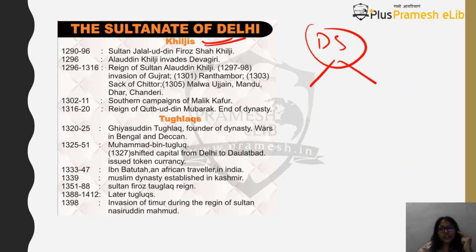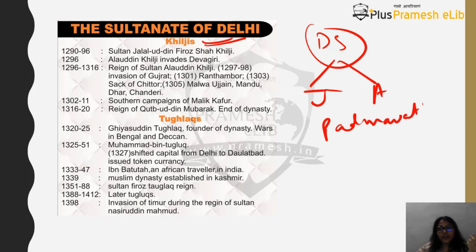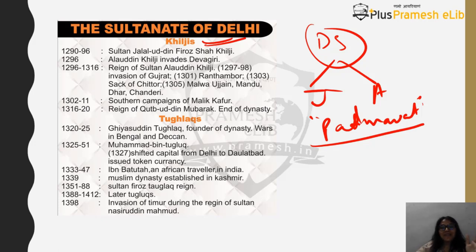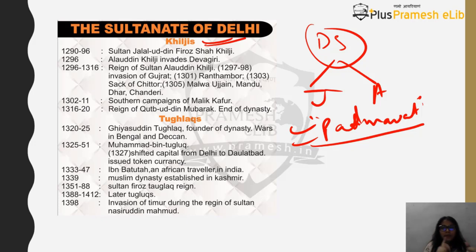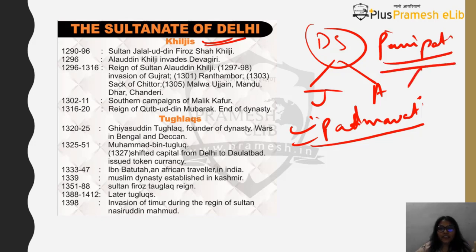Now we move to the second dynasty within the Delhi Sultanate: the Khiljis. The two names to remember are Jalaluddin Khilji and Alauddin Khilji. If you have watched the movie Padmavat, which gained a lot of controversy, it is easier to remember things. I recommend watching historic movies — you get to remember history much more easily, including the names, years, and contemporaries.